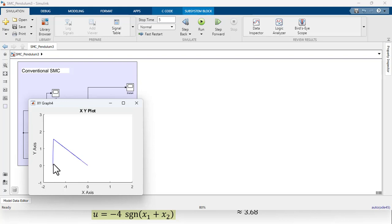It brings any initial condition to this sliding surface, and then the trajectories slide on the sliding surface to reach the equilibrium point, which is over here.